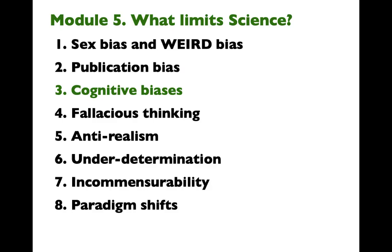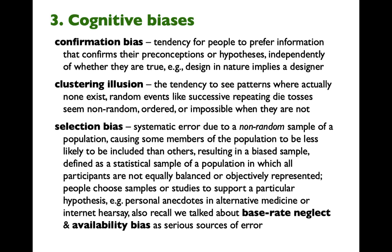Recall that we discussed cognitive biases. For instance, we talked about confirmation bias — the tendency for people to prefer information that confirms their preconceptions or hypotheses they believe already, independently of whether they are true. For example, design in nature implies a designer. There are also other issues. Here's another one I have not mentioned: the clustering illusion, the tendency to see patterns where actually none exist. Our brains are good at this. Random events like successive repeating die tosses seem non-random, ordered, or impossible when they are not. I also mentioned a number of selection biases, in particular base rate neglect and availability bias, as serious sources of error.